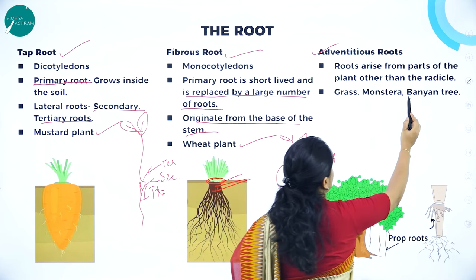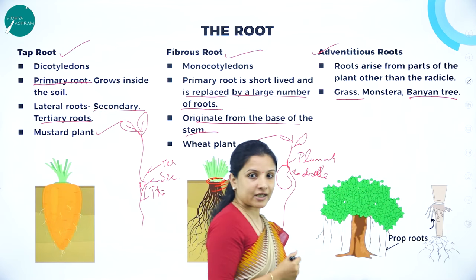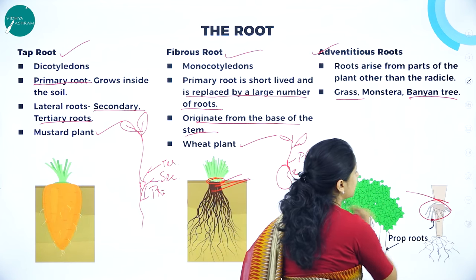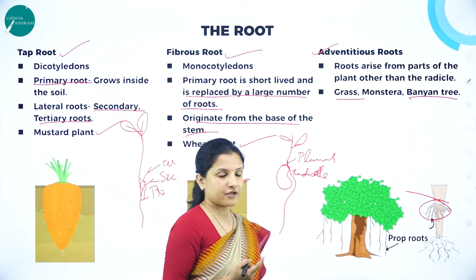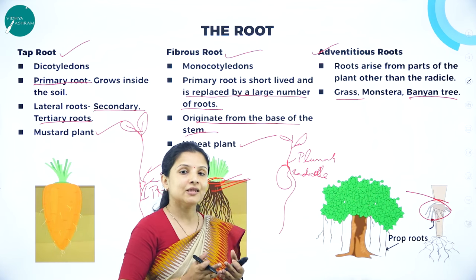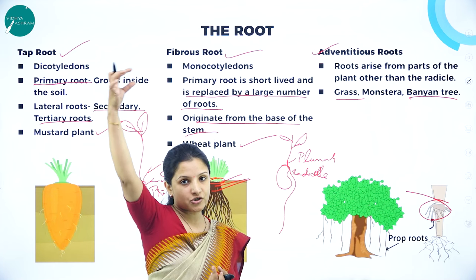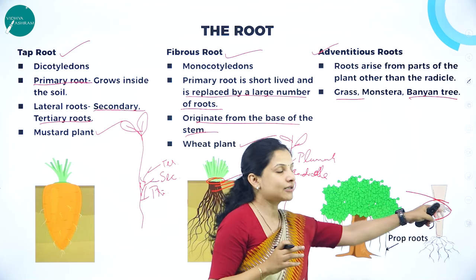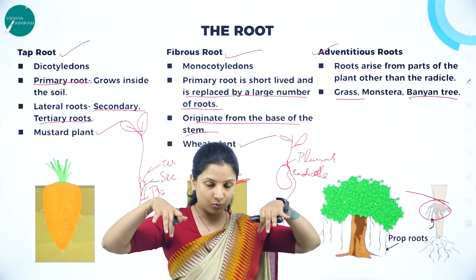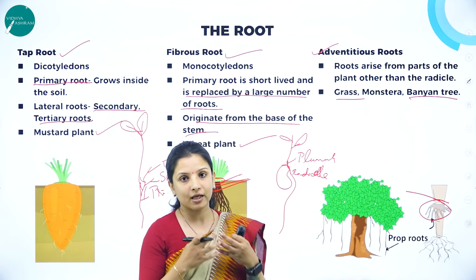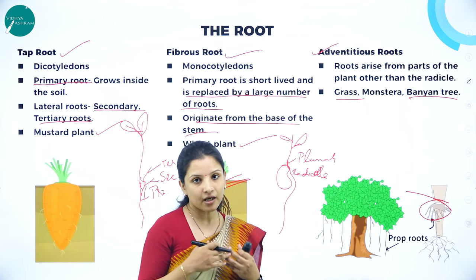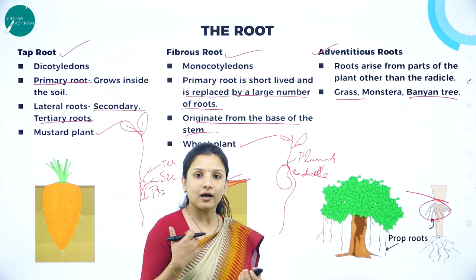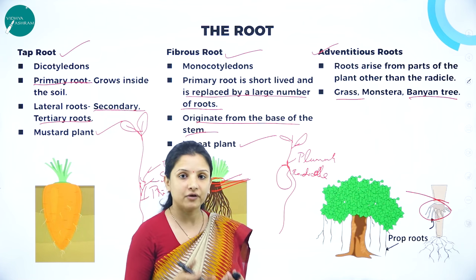Banyan trees, some grasses, and sugarcane also have prop roots. Sugarcane belongs to the grass family and has what is called a stilt root — this is a modification of prop root. Because sugarcane grows very lengthily, whenever wind comes it should not fall, so these roots arise from the nodes and root deeply into the soil to hold the plant properly even in heavy winds. Monstera is also a plant that has prop roots. These are the three types of roots: taproot, fibrous root, and adventitious roots.